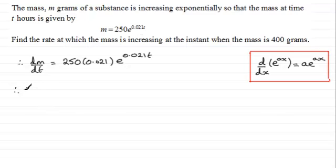We don't actually have to physically get that value of t, because we can say therefore when m equals 400, if we substitute it in that equation, we get 400 equals 250 e to the power 0.021t.